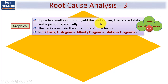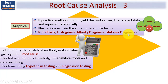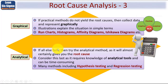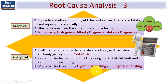If practical methods do not yield the root causes, then you'll want to collect data and represent the situation graphically. Illustrations explain the situation in simple terms using diagrams such as run charts, histograms, affinity diagrams, and Ishikawa diagrams. If all else fails, you would try the analytical method, which will almost certainly give you the root cause — though it requires knowledge of analytical tools and can be time consuming. Many analytical methods include hypothesis testing and regression testing.